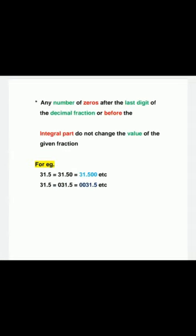Any number of zeros after the last digit of the decimal fraction or before the integral part do not change the value of the given fraction. For example, 31.5 is equal to 31.50, equal to 31.500, and so on. Or 31.5 is equal to 031.5, equal to 0031.5, and so on.